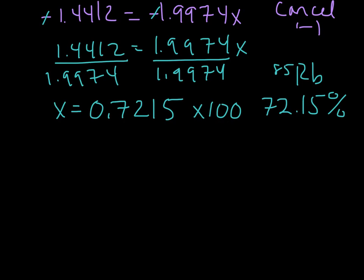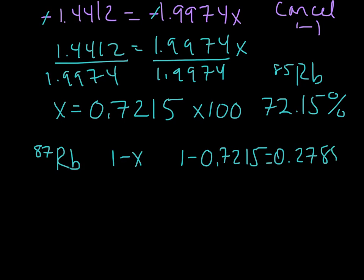Now, for the 87 isotope, so 87 rubidium, then it was 1 minus x. So let's do 1 minus 0.7215, and we are going to get 0.2785.